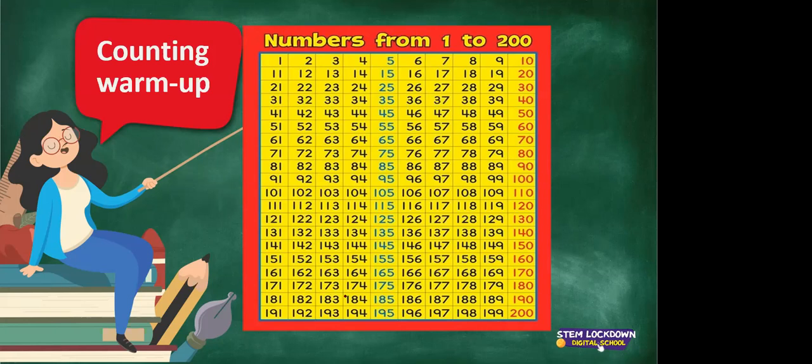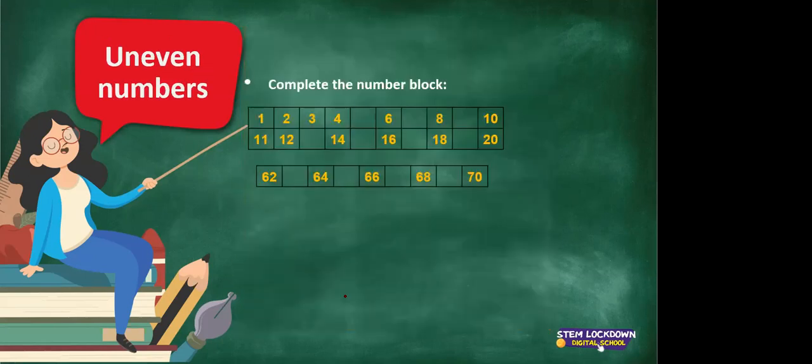Hooray, now we are warm and ready for our lesson today. Look at this number block. What do you see here? There are numbers from one, two, three, and now there are open spaces and we need to fill up the open spaces.